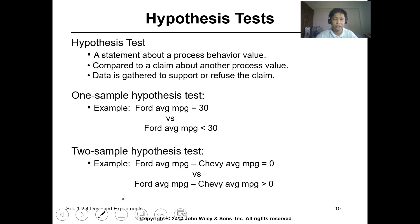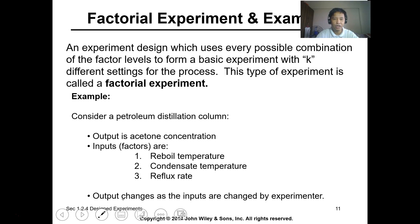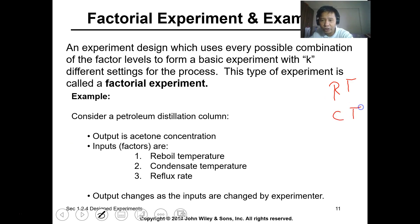To test hypotheses we usually do experimental analysis or data gathering. For experimental processes we typically use factorial design, where all factors or independent variables are tested at their significant levels. For example, in a petroleum distillation column where you want to know the acetone concentration output, you have independent variables: the reboiler temperature, condenser temperature, and reflux rate.